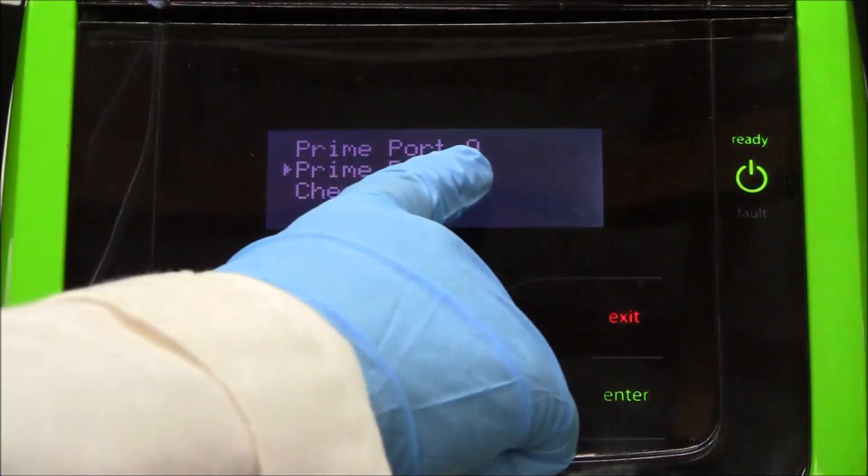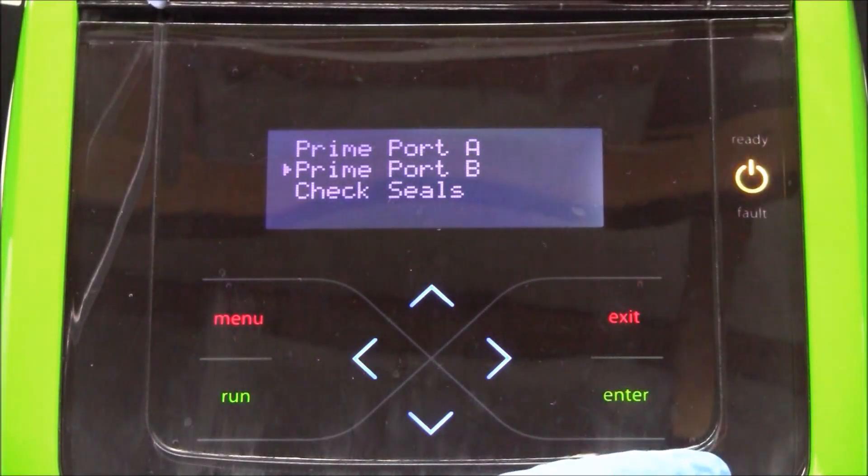Now prime port B three times. This will fill the line with the blank solution.